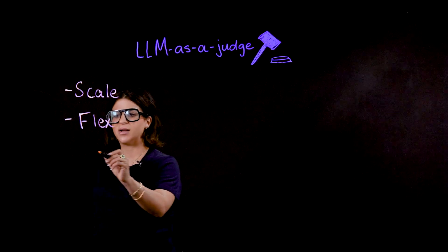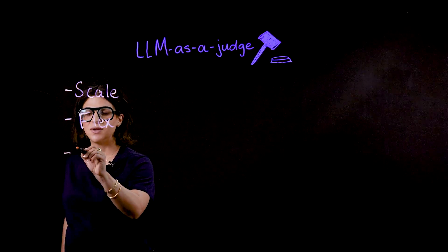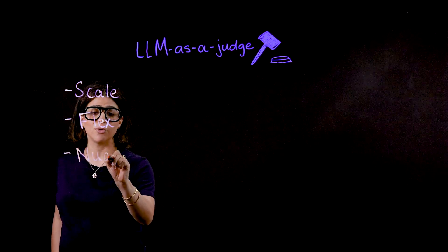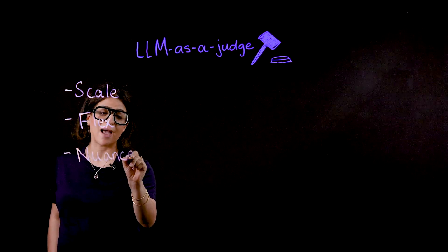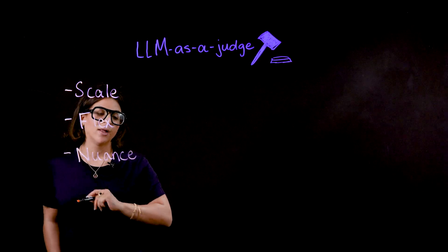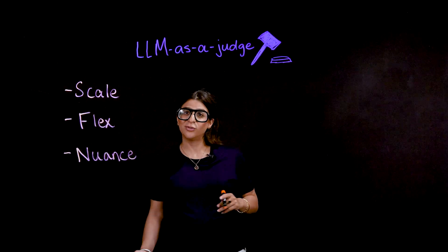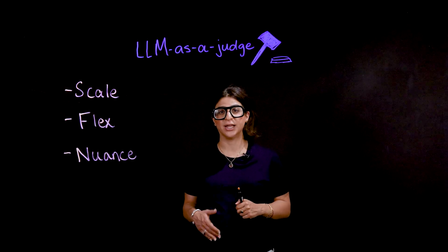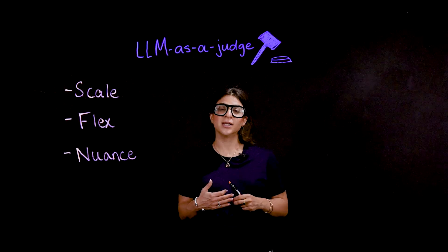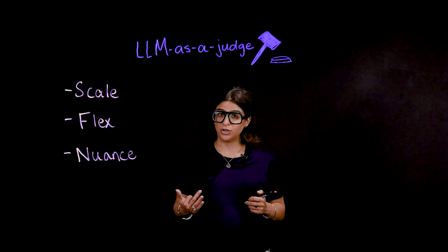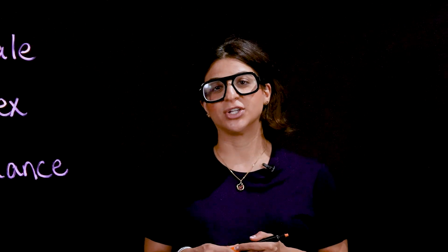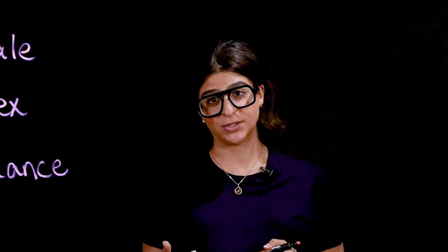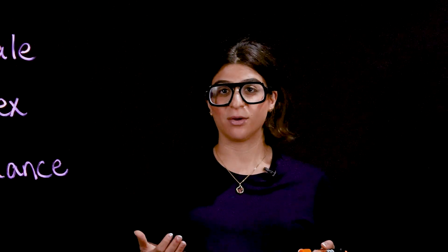And lastly, there's nuance. Traditional metrics like BLEU and ROUGE focus on word overlap, which is nice if you have a reference. But what if you don't have a reference? What if you want to ask a question like, is my output natural? Does it sound human? LLM as a judge lets you do these evaluations on more subjective outputs without a reference.